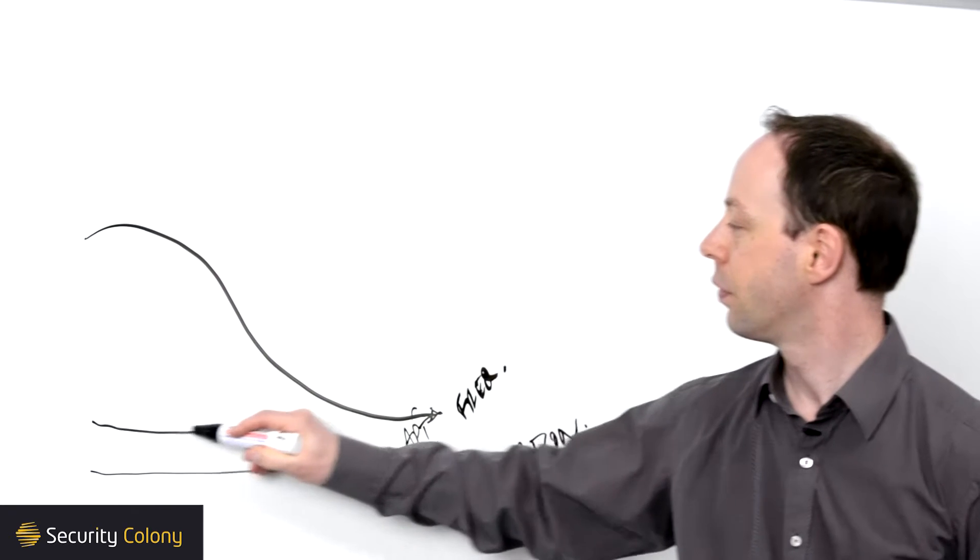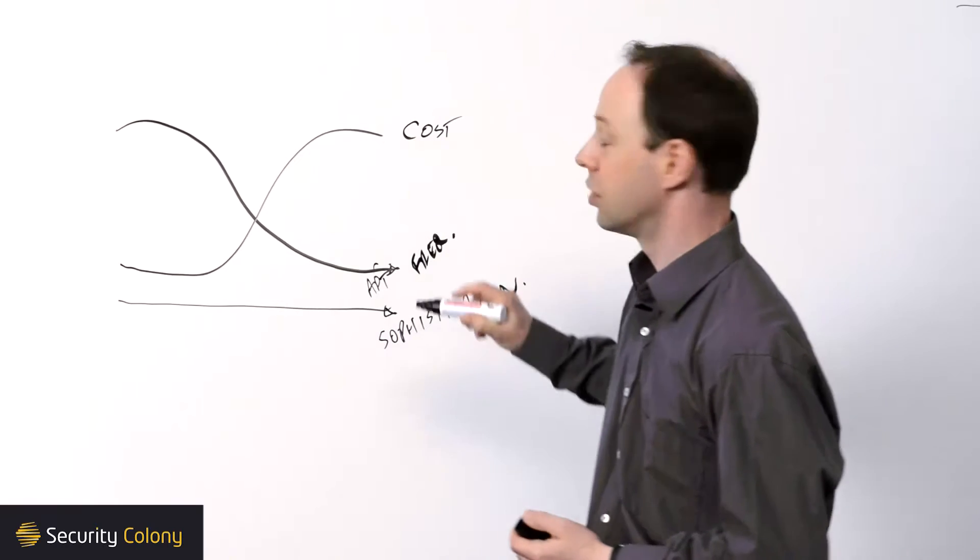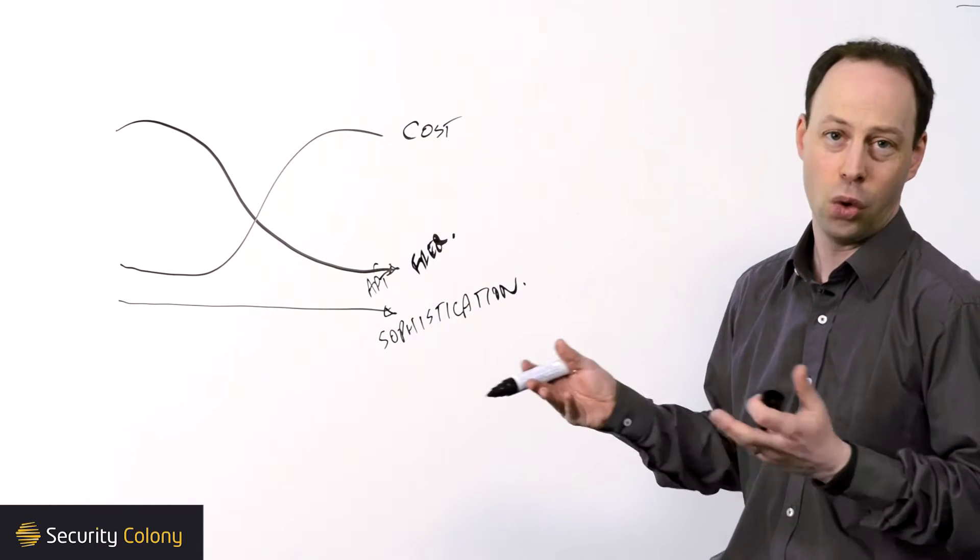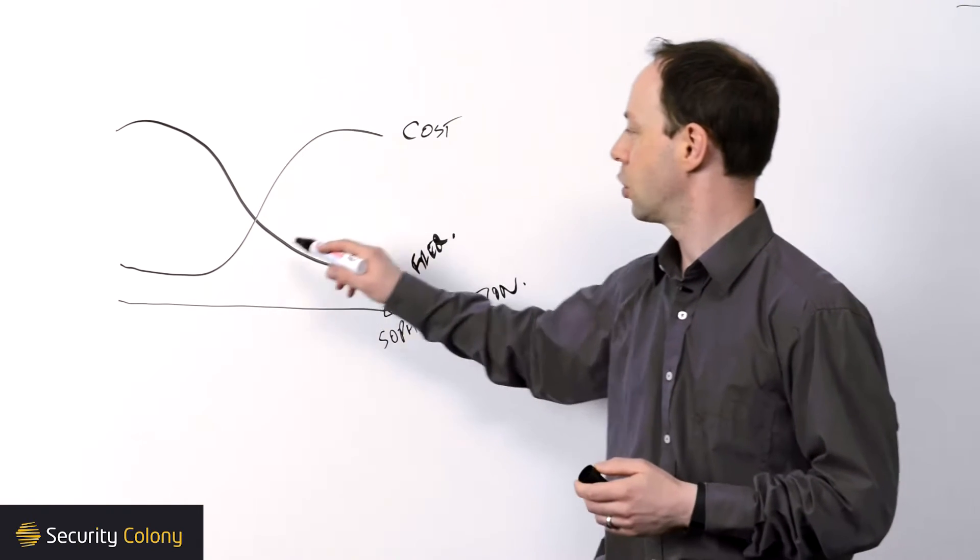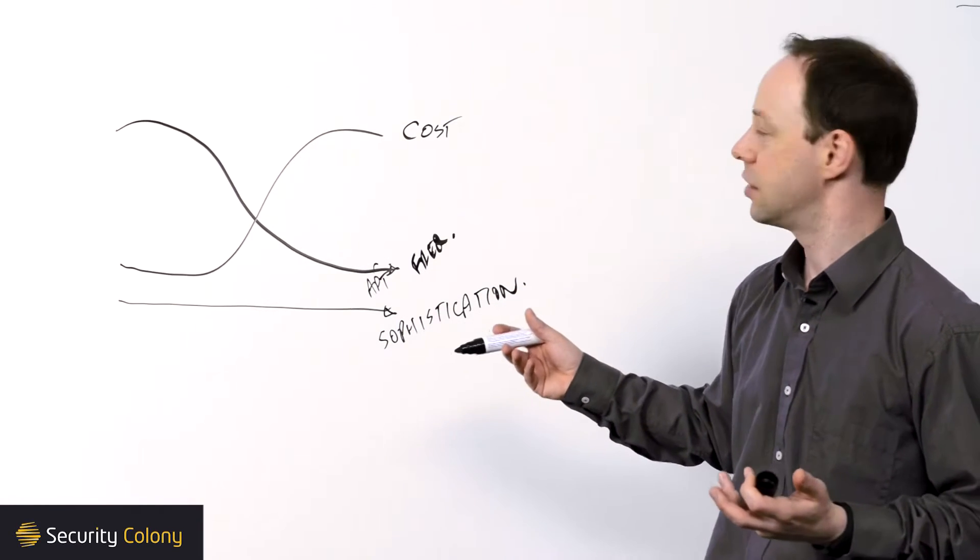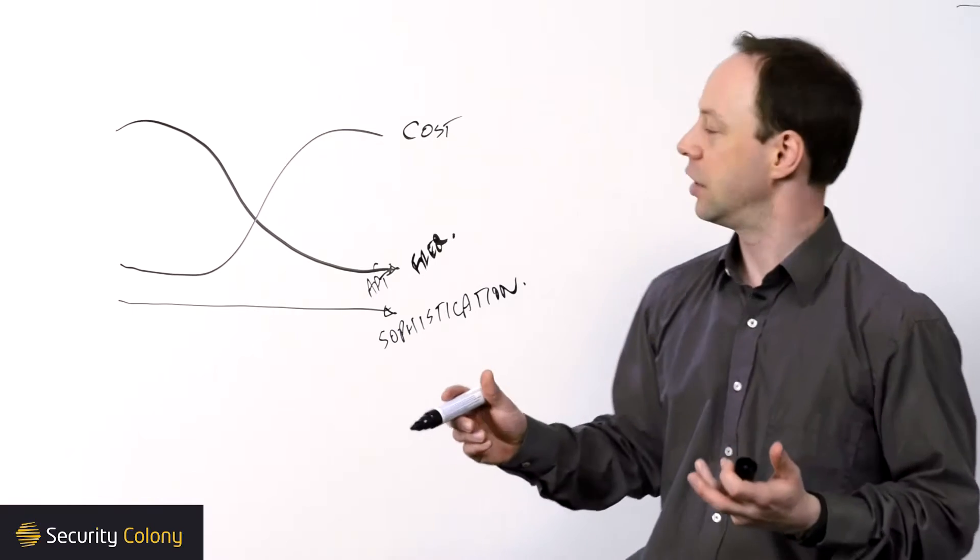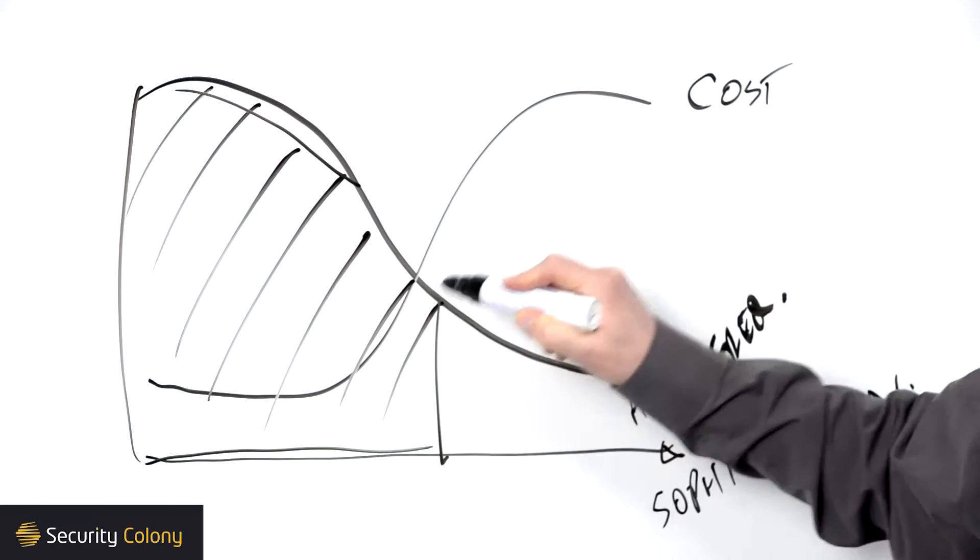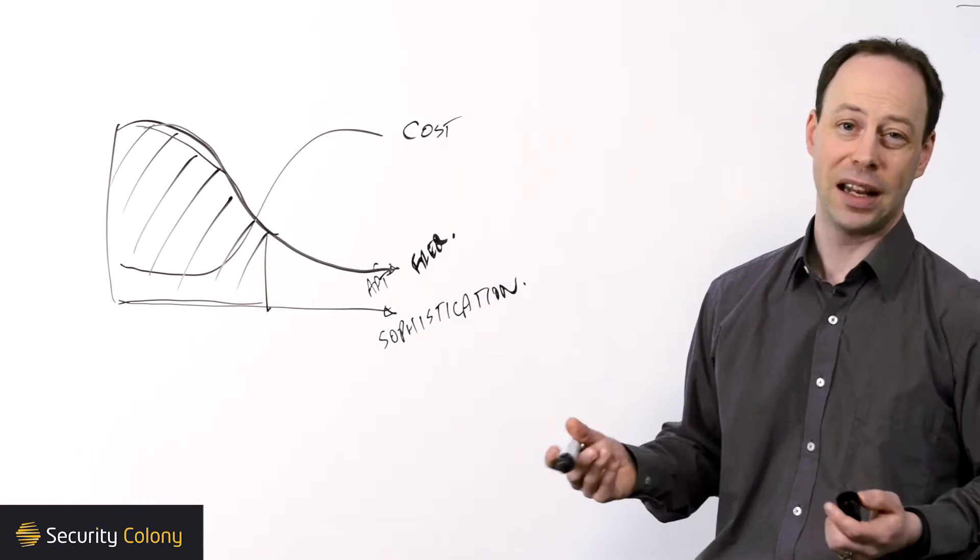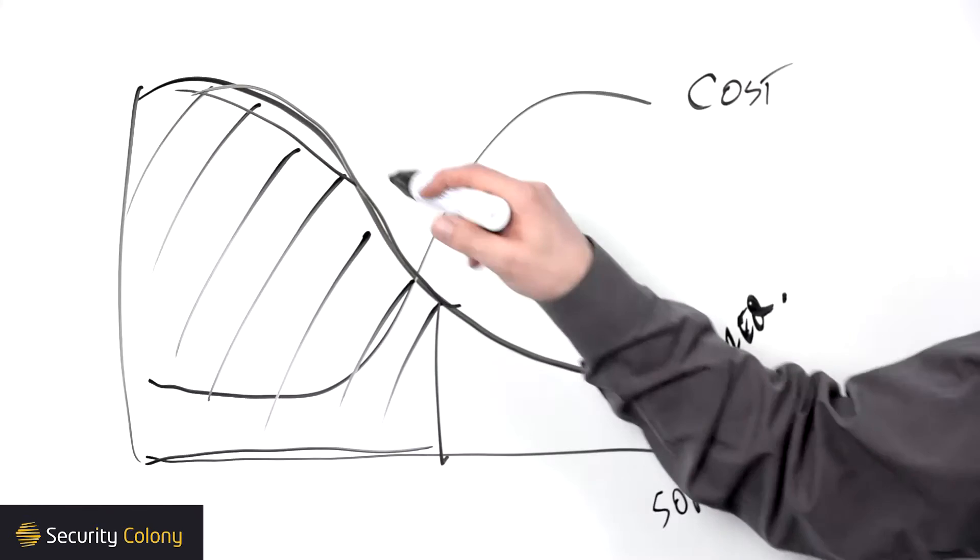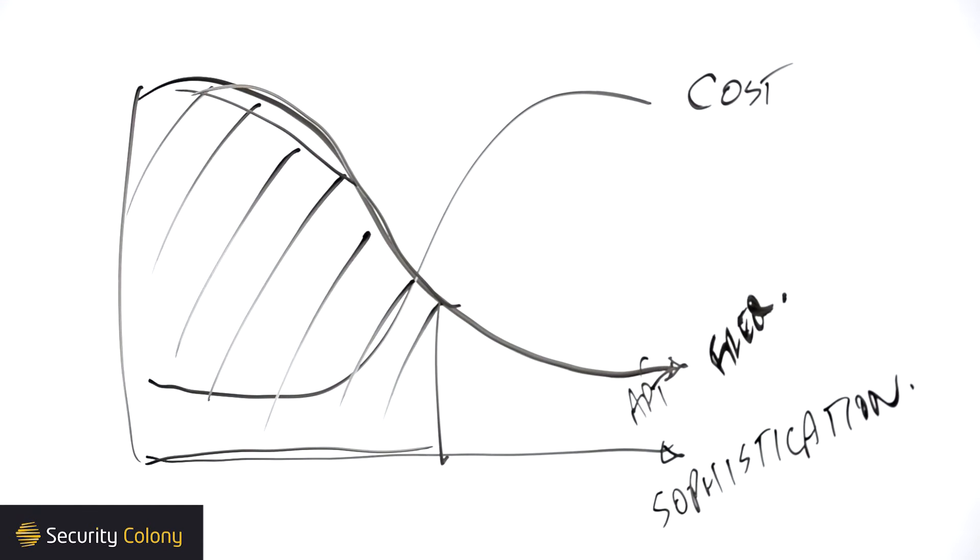At the same time, we have the cost to manage those attacks - effectively, the cost to put the controls in place that are going to prevent or respond to those attacks. The reality is the cost increases pretty rapidly as the sophistication increases for obvious reasons. So the concept of Minimum Viable Security is that somewhere in here, there is a point at which it ceases to be effective to invest because the frequency, the likelihood, just isn't high enough for your organization. What's the set of controls that's going to manage the majority of attacks that you're likely to experience?